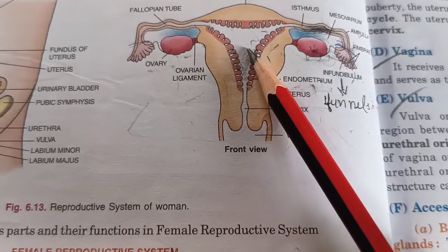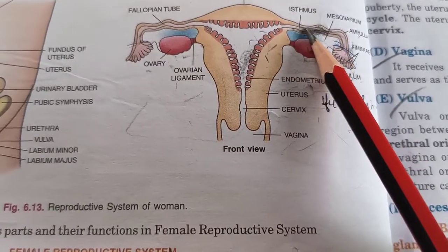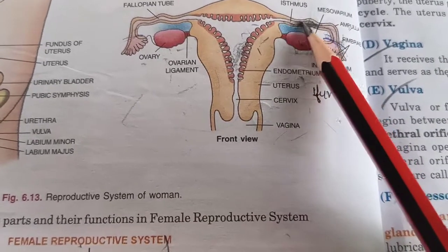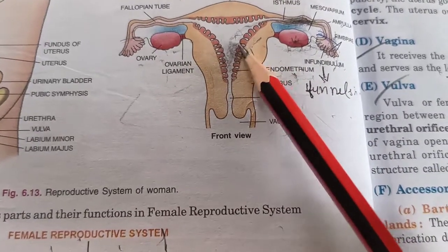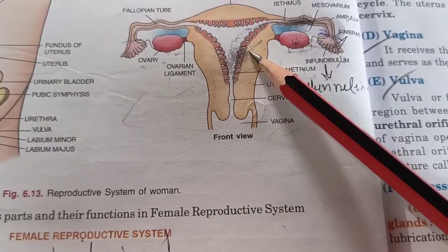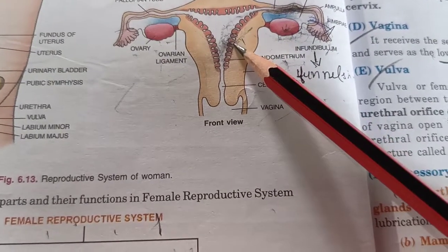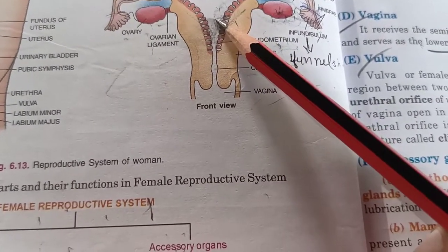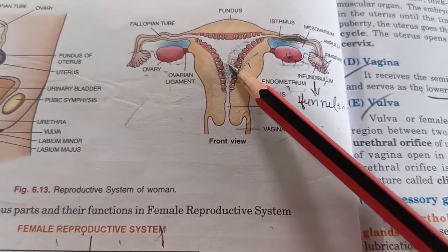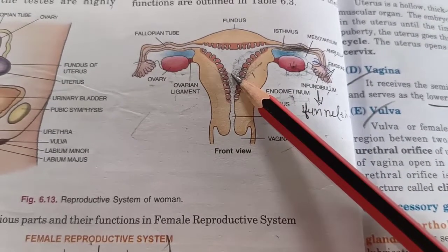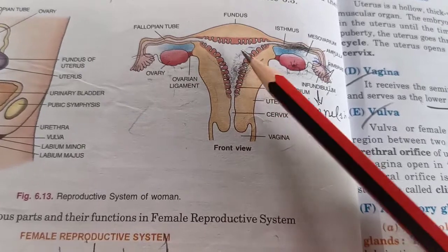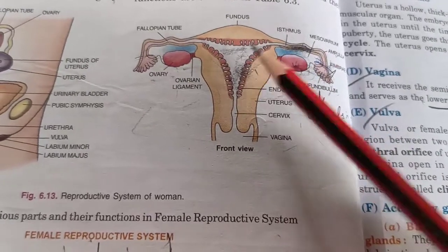Embryo development happens in the uterus. When fusion of male and female sex cells occurs in the fallopian tube, the product formed is a zygote. The zygote then comes and attaches — implants — to the endometrium, which is the inner layer of the uterus. Here it receives nourishment for 9 months. The tissue that provides nourishment to the fetus is called the placenta. Placenta is also the connection between mother and fetus — this frequently appears in exams.